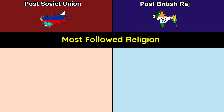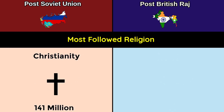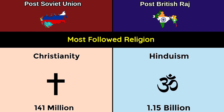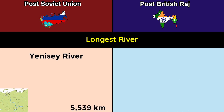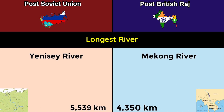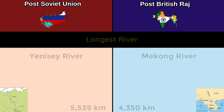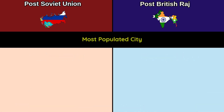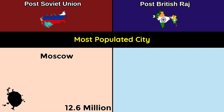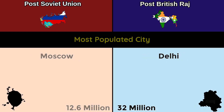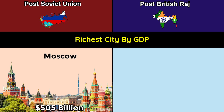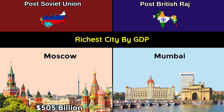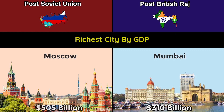Most followed religion: Christianity at 141 million versus Hinduism at 1.15 billion. Longest river: Yenisei River at 5,539 km versus Mekong River at 4,350 km. Most populated city: Moscow at 12.6 million versus Delhi at 32 million. Richest city by GDP: Moscow at $505 billion versus Mumbai at $310 billion.